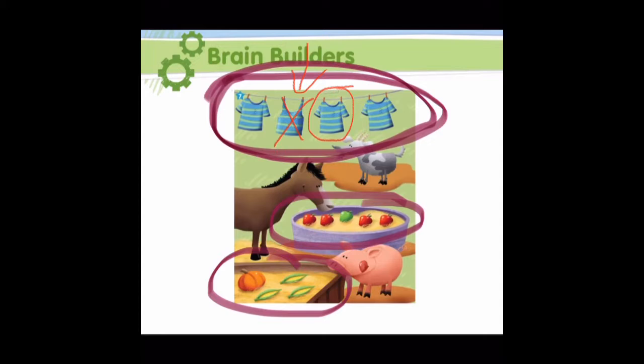Let's take a look at the objects near the horse. We have five apples. Which apple is different than the rest? Good job — this apple is different because it is a different color — it's green, and the other apples are red. So let's put an X on it. Therefore the rest of the apples are alike — they are the same, so let's circle them.